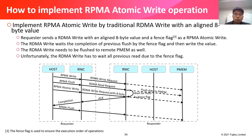How to implement rpma_atomic_write: librpma implements it by a traditional RDMA write with an aligned 8-byte value and a fence flag. The RDMA write waits for completion of the previous flush using the fence flag and then writes the value. The RDMA write also needs to be flushed to remote P-memory. Unfortunately, the RDMA write has to wait for all previous reads due to the fence flag.